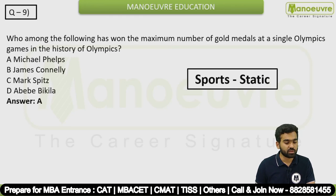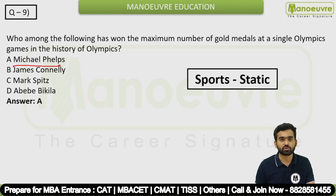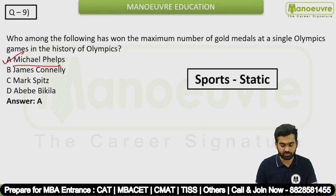Question 9 is a sports-related question. Who among the following has won the maximum number of gold medals at a single Olympic Games in the history of the Olympics? The answer is Michael Phelps — he is a swimmer.